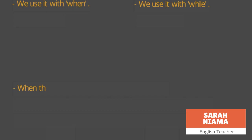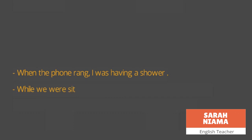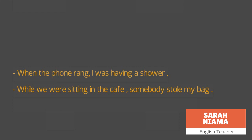Example: 'When the phone rang, I was having a shower.' Here 'when' links two clauses — the first with past simple ('the phone rang'), and the second with past continuous ('I was having a shower'). Another example: 'While we were sitting in the cave...' — 'while' takes the past continuous ('were sitting'), because the clause that comes with 'while' must have a continuous tense.